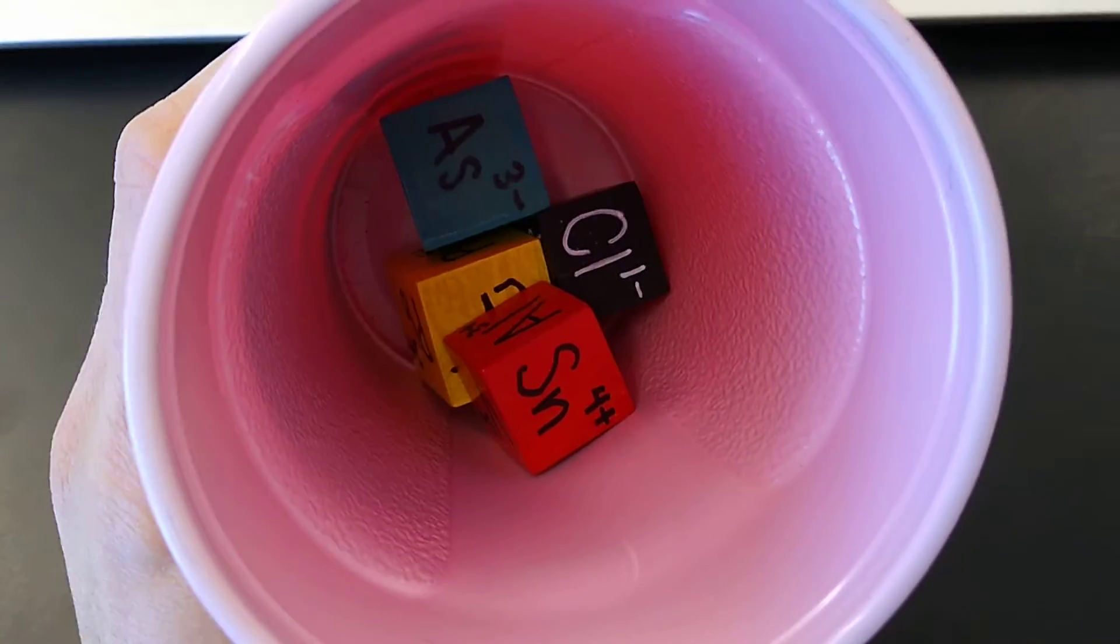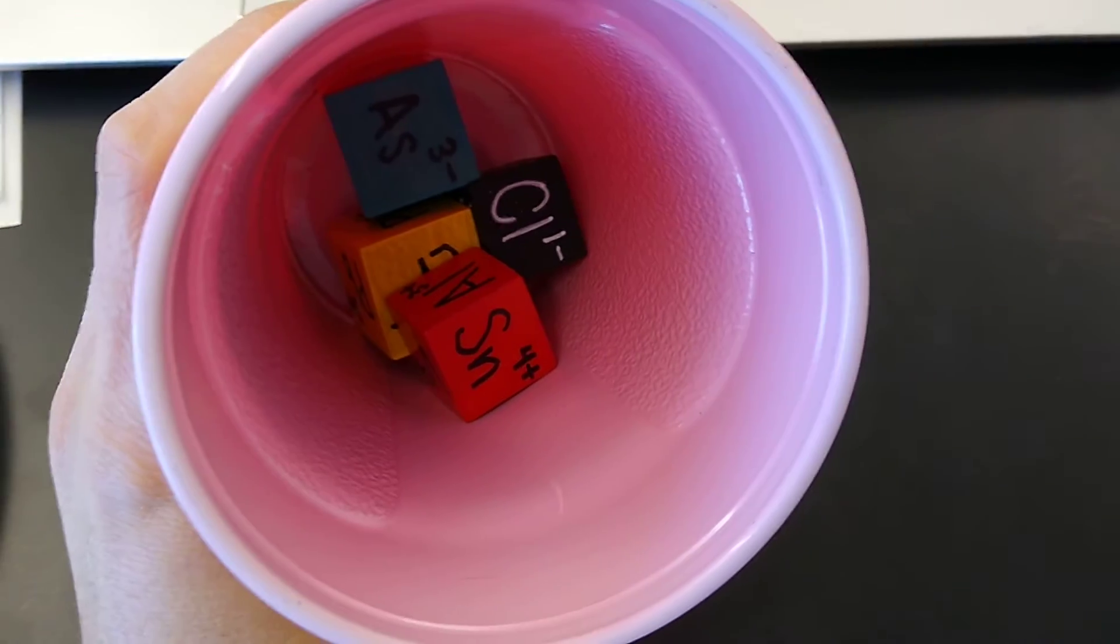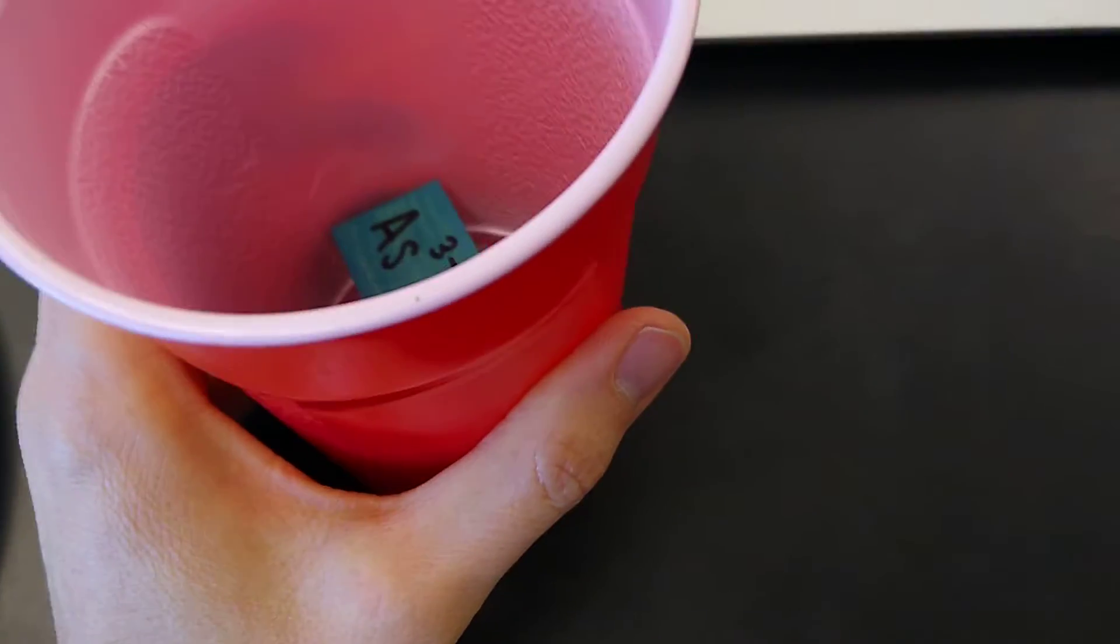Alright, so this is our ionic dice video. I already gave you the tutorial on how to fill in the worksheet. Now I'm going to roll dice for you. There are 13 lines in your table on the front and 13 lines in your table on the back and you'll fill in these ions for those.